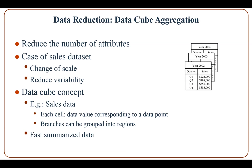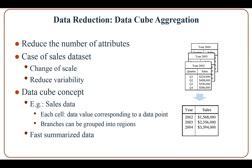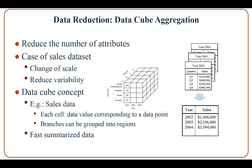Data cube aggregation uses aggregation operations to reduce the number of attributes. Consider a sales dataset containing quarterly sales data from 2002 to 2004 — the data can be aggregated to provide yearly sales from 2002 to 2004. Aggregation operations are provided by the DataCube. Each cell holds a data value corresponding to a data point in a multi-dimensional space including item type, branch, and year. Branches can be grouped into regions, which helps summarize data quickly.